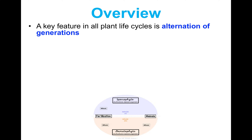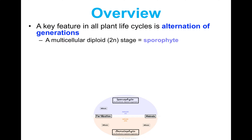An important overview of something that is unique to plants is that all plant life cycles have a feature called an alternation of generations. This started at the very beginning with the first photosynthetic organisms of algae, where the generations were really similar, whereas they're much more differentiated in land plants, as we're going to see.